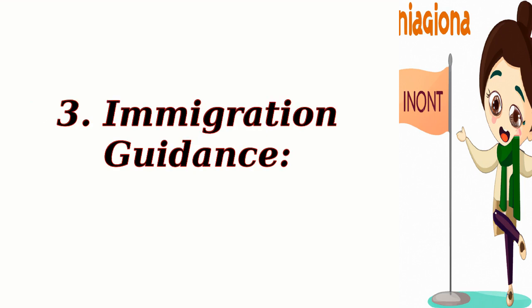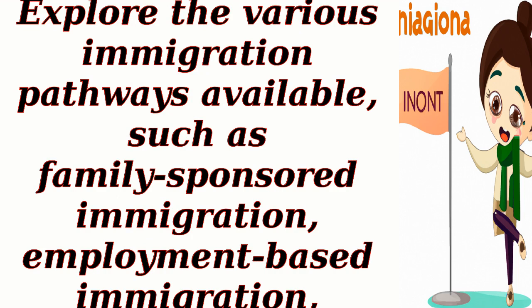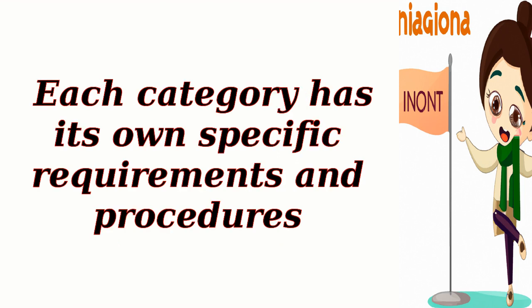Immigration guidance. Consult an immigration attorney — if you plan to immigrate to the USA, it's advisable to consult an immigration attorney who can guide you through the process and provide personalized advice based on your specific circumstances. Research immigration options — explore the various immigration pathways available, such as family-sponsored immigration, employment-based immigration, diversity visa lottery, and more. Each category has its own specific requirements and procedures.